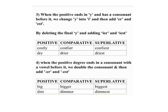Rule 3 examples — positive, comparative, superlative: costly, costlier, costliest; dry, drier, driest. Rule 4: When the positive degree ends in a consonant with a vowel before it, we double the consonant and then add -er and -est.